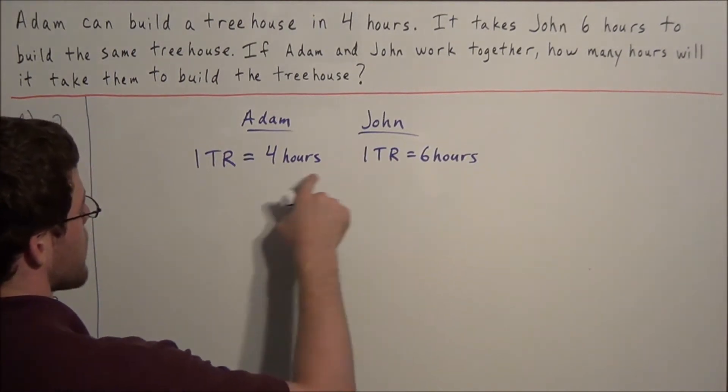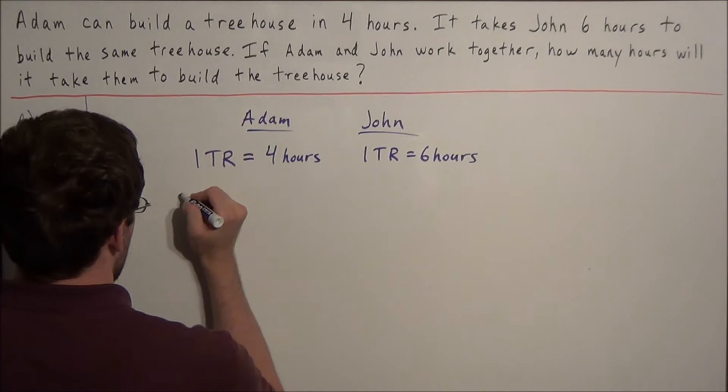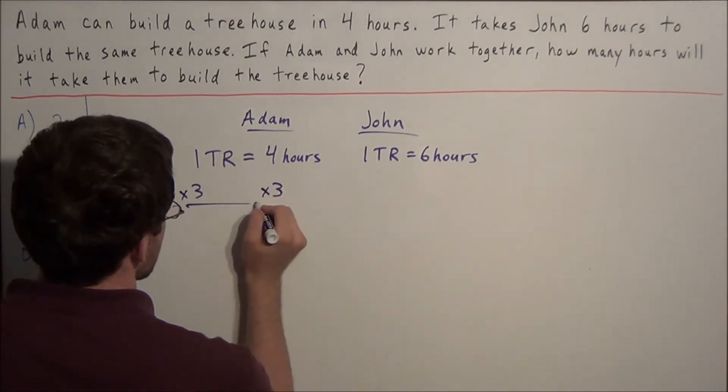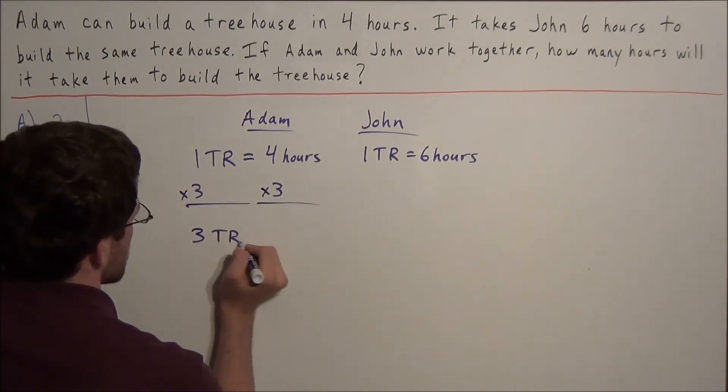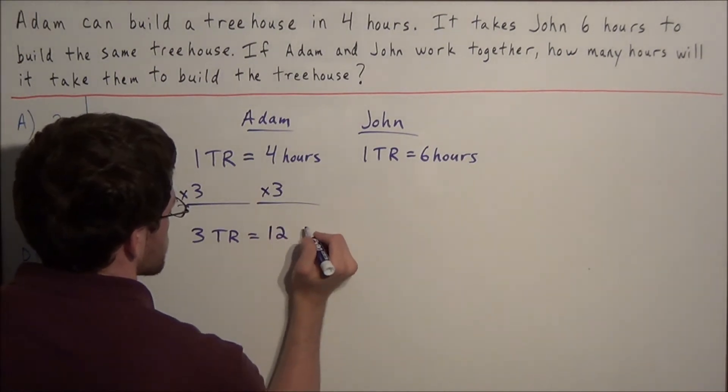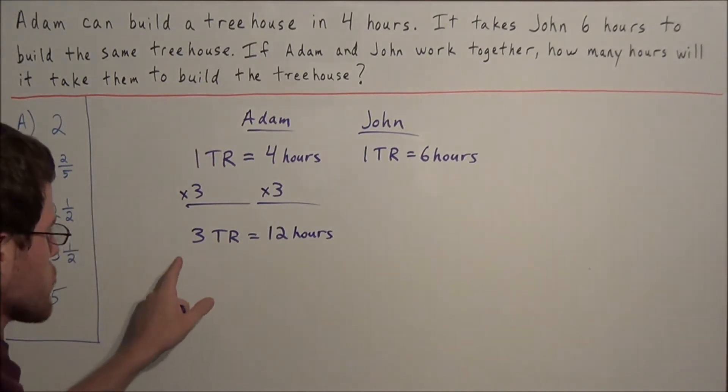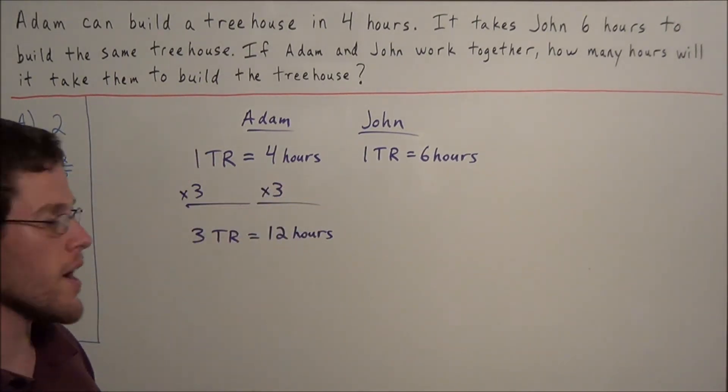The strategy is getting their times to match. So what we need to do is to find the least common multiple of four and six. On this side we're going to multiply both sides of this equation by three. And we have three treehouses in four times three, which is twelve hours. This tells us that Adam can build three treehouses in twelve hours, which makes sense if he could build one treehouse in four hours.